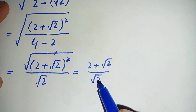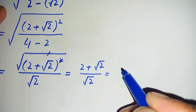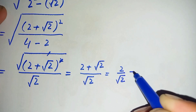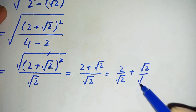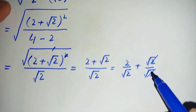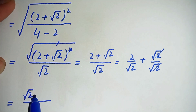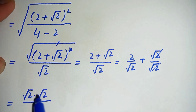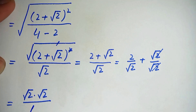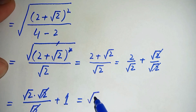We split the division: 2 divided by square root of 2, plus square root of 2 divided by square root of 2. The second term's square roots cancel, leaving just 1. We rewrite 2 as square root of 2 times square root of 2; those cancel with the denominator's square root of 2, leaving square root of 2. So the result is square root of 2 plus 1.